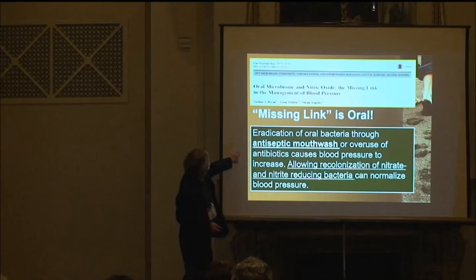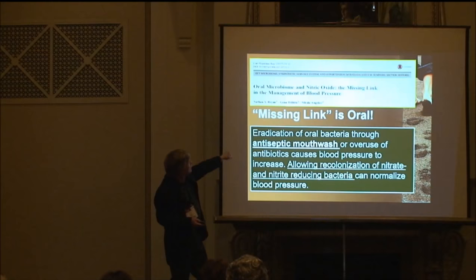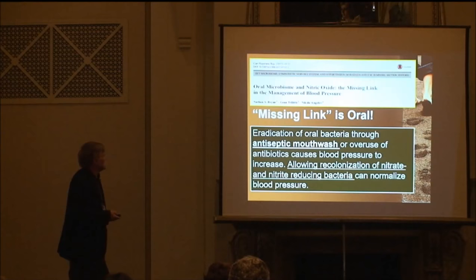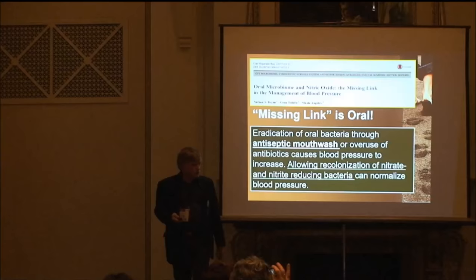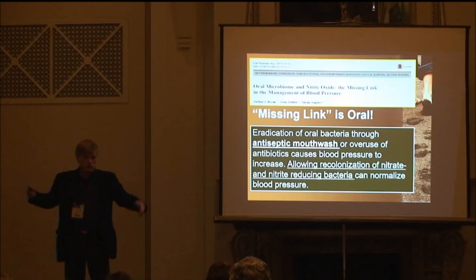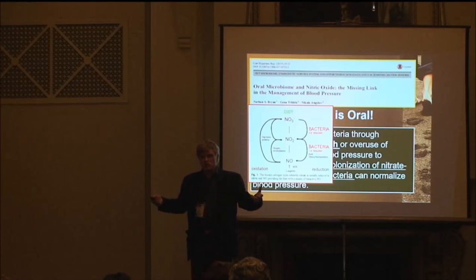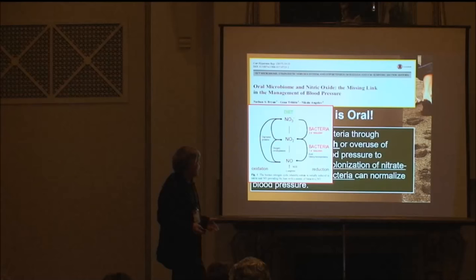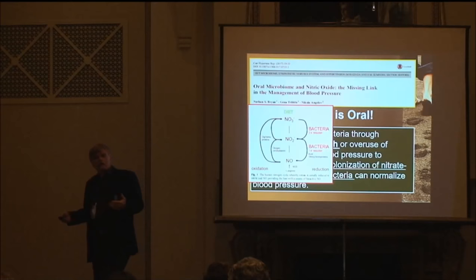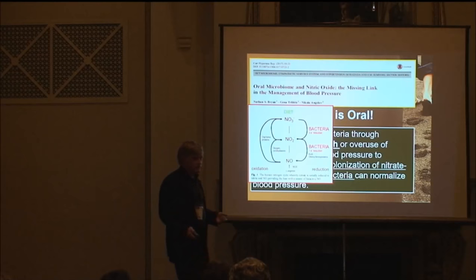Published in Current Hypertension Reports — by cardiologists — the missing link in hypertension is the eradication of important bacteria by antiseptic mouth rinses, and we need to allow recolonization of the nitrate reducers. Here is how it works: in your mouth you have nitrate reducers. You eat green vegetables, which are broken down to nitrites. You swallow them; there are also nitrite-reducing bacteria. In the stomach it's converted to nitric oxide, which you absorb and it gets concentrated by a factor of ten into the saliva, killing off pathogens.